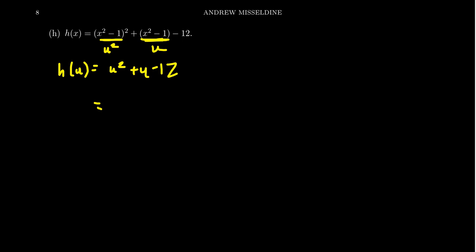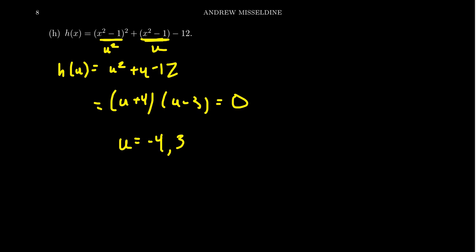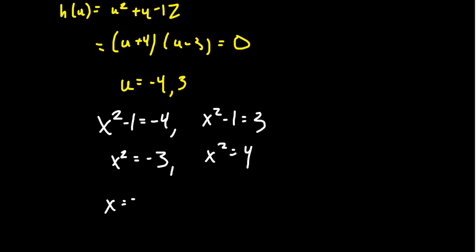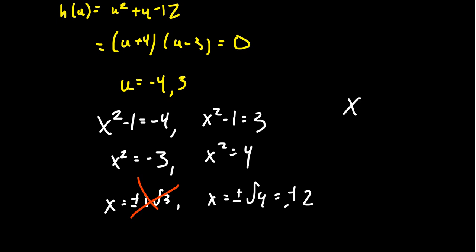This quadratic factors as (u + 4)(u - 3) = 0, giving u = -4 or u = 3. Removing the substitution and going back to x, since u = x² - 1: x² - 1 = -4 gives x² = -3, so x = ±i√3; x² - 1 = 3 gives x² = 4, so x = ±2. Discarding the non-real solutions, the x-intercepts are x = 2 and x = -2.